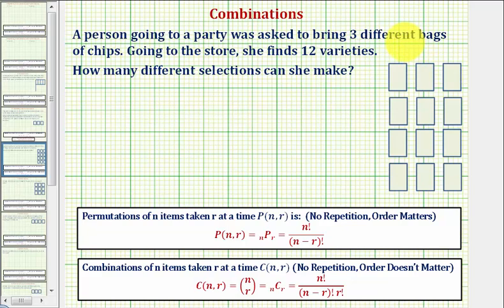the first question should be, does the order matter? If the order matters, then we'll use a permutation to determine the total number of ways this can be done. If the order doesn't matter, we use a combination.